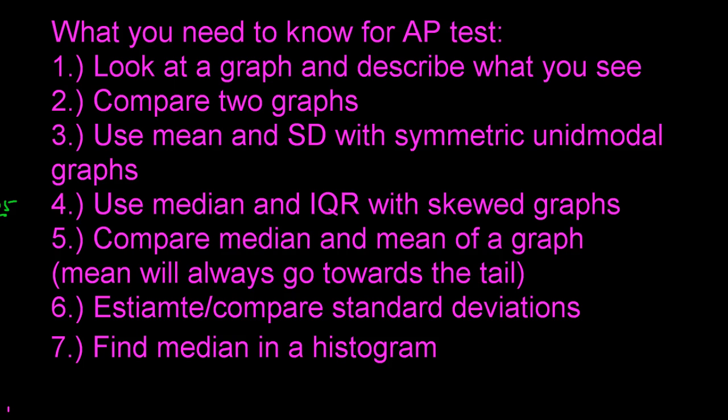Use mean and standard deviation with symmetric, unimodal data. Use median and IQR when data is skewed. This comes up a lot on the AP test — they'll show you a graph and ask which measures to use. If the graph looks symmetric, go with mean and standard deviation. If it's skewed, go with median and IQR. That can be a free easy multiple choice question.